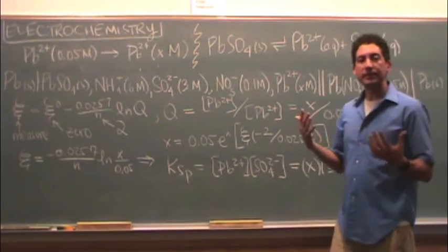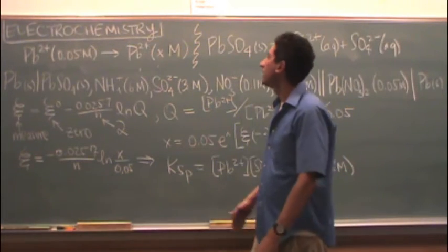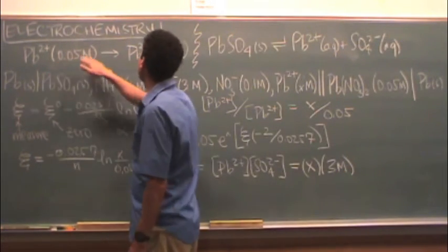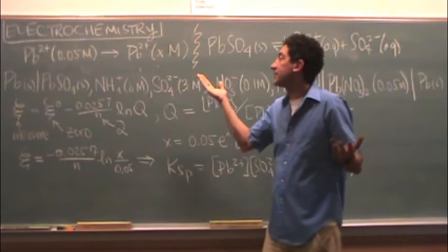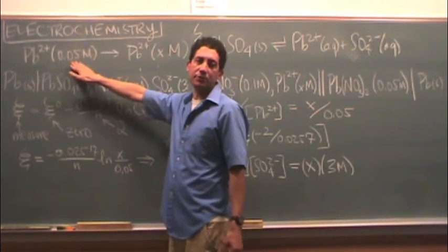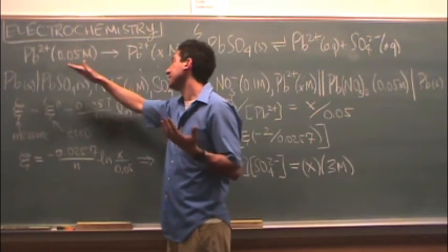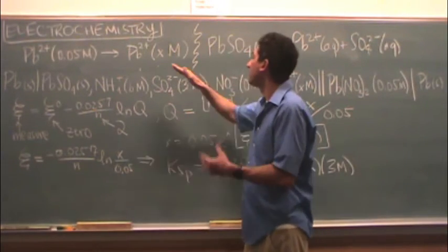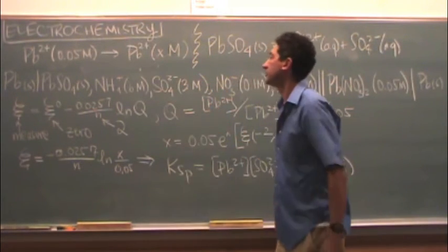What is set up is a concentration cell, like the other part. In this case, we have lead 2 plus go to lead 2 plus. And you happen to know this concentration, we'll say it's 0.05 for this sample, might be different than your lab. And then it's going to unknown concentration.